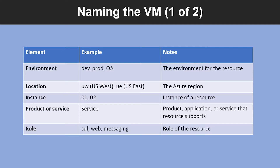A good convention is to include the following information in the name. First, environment — is this for development, production or QA? Second, location — where you would like to host your VM. Third, instance — for resources that have more than one named instance; for example, if it is a web server, you might name it web server 01 or web server 02. Fourth, product or service — which identifies the product, application or service that the resource supports. And fifth, role — is it going to be an SQL server, a web server, or a messaging service?